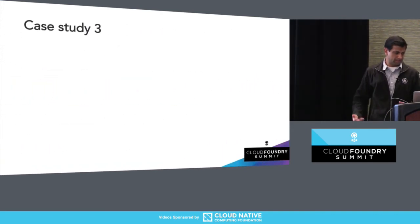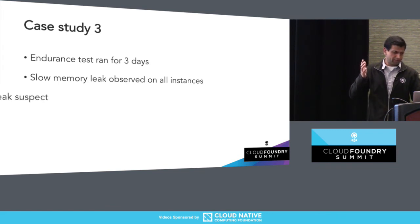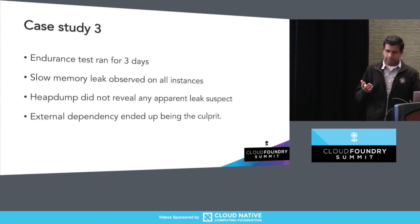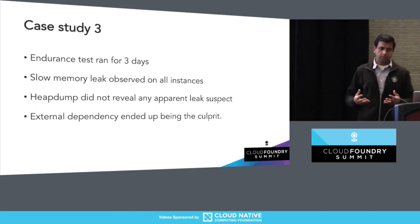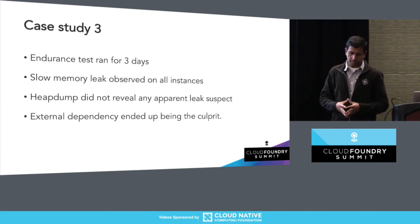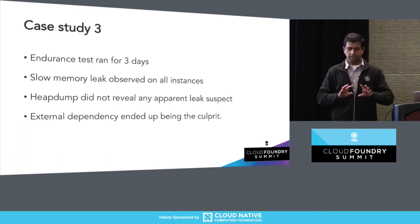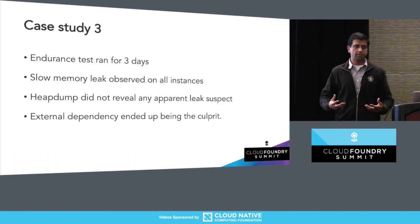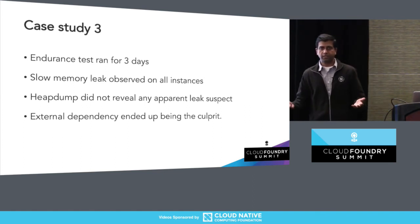The last case study: we ran an endurance test for three days and observed a very small memory leak across all instances. The heap dump was not helpful in identifying the leak suspect. What ended up happening was one of the external dependencies we had was leaking memory — it was doing bytecode analysis as part of the JVM and leaking memory in some cases. What I'm trying to say is that your own code may not be the problem. Because we have external dependencies that we rely upon, those might be causing it too. If you can't find a leak suspect in your code, try removing external dependencies to see if that resolves the problem — in maybe four out of ten situations, that might be the cause.